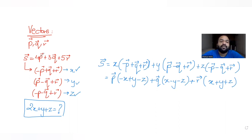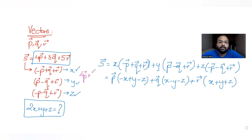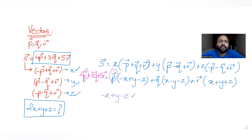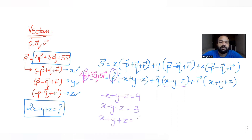Now equating with the original expression s̄ = 4p+3q+5r. Along p: −x+y−z = 4 (equation 1). Along q: x−y−z = 3 (equation 2). Along r: x+y+z = 5 (equation 3). Now I need to solve these three equations to find x, y, and z.